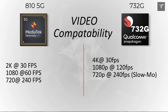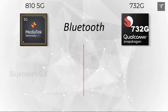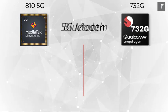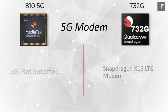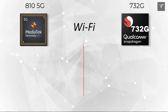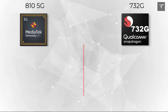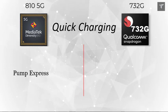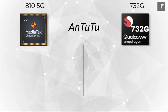The Snapdragon 732G can record 4K at 30 fps. On connectivity, both processors feature Bluetooth 5.0, but the 5G modem is available only on the MediaTek Dimensity 810 — the Snapdragon does not include a 5G modem. On Wi-Fi, the Dimensity 810 supports the newer Wi-Fi 6, while the Snapdragon supports the older Wi-Fi 5. For fast charging, the Dimensity 810 supports Pump Express charging while the Snapdragon 732G supports Quick Charge 4+.